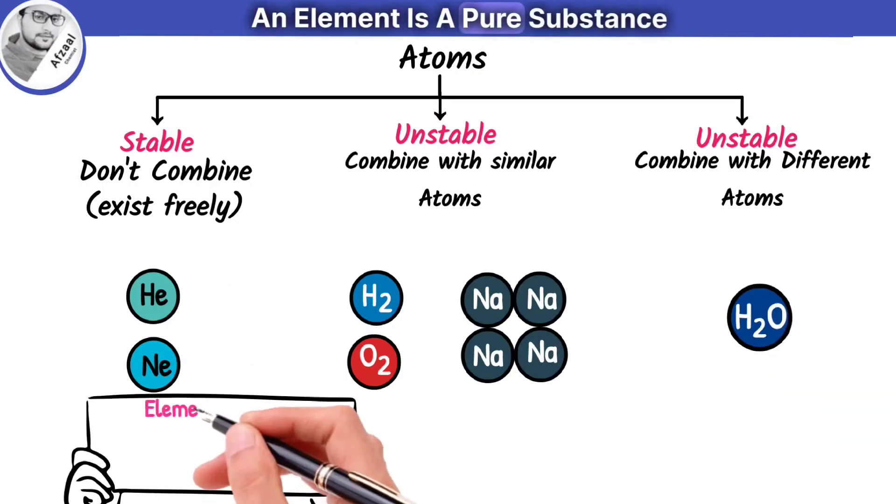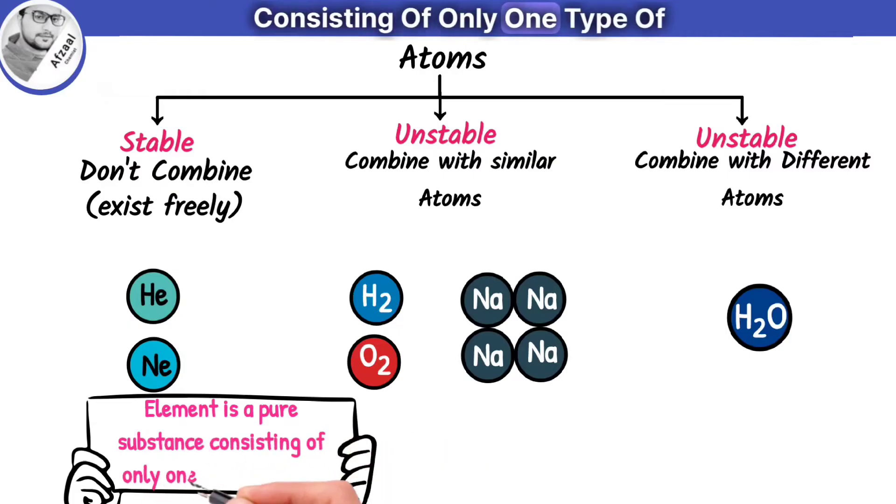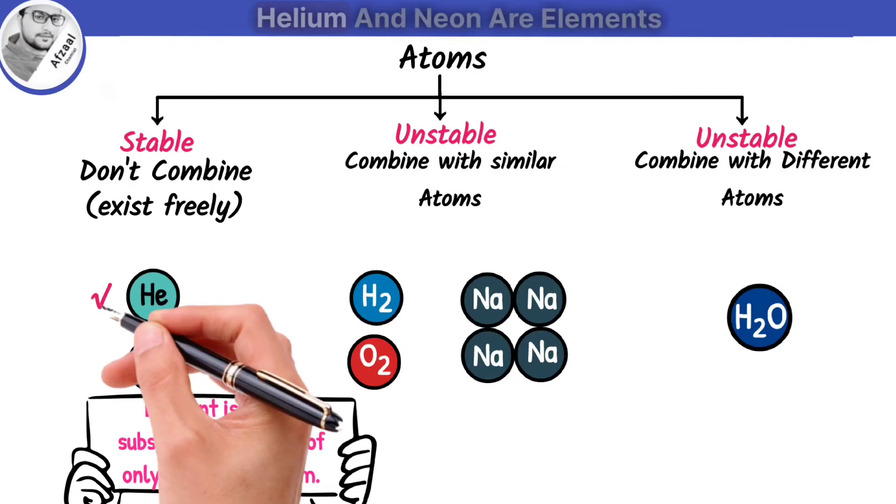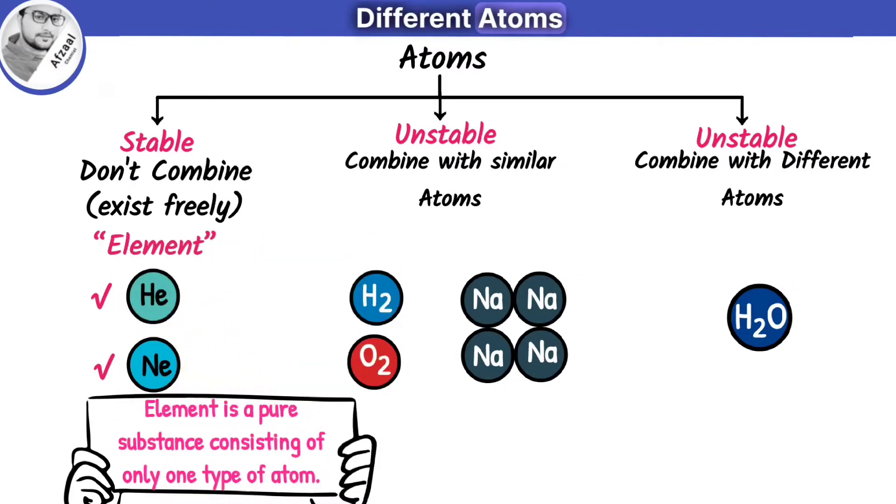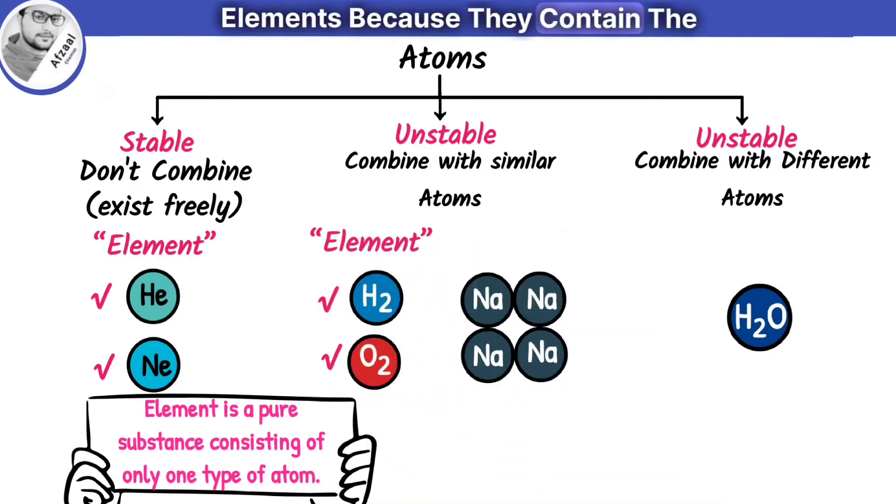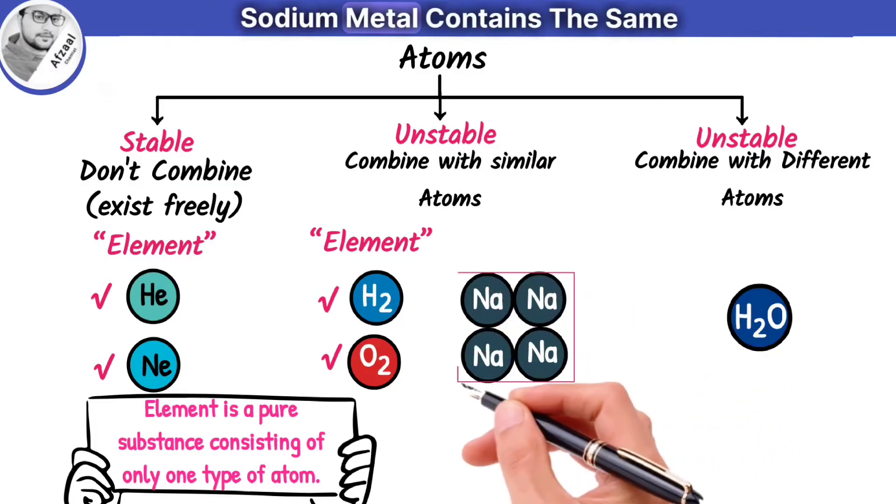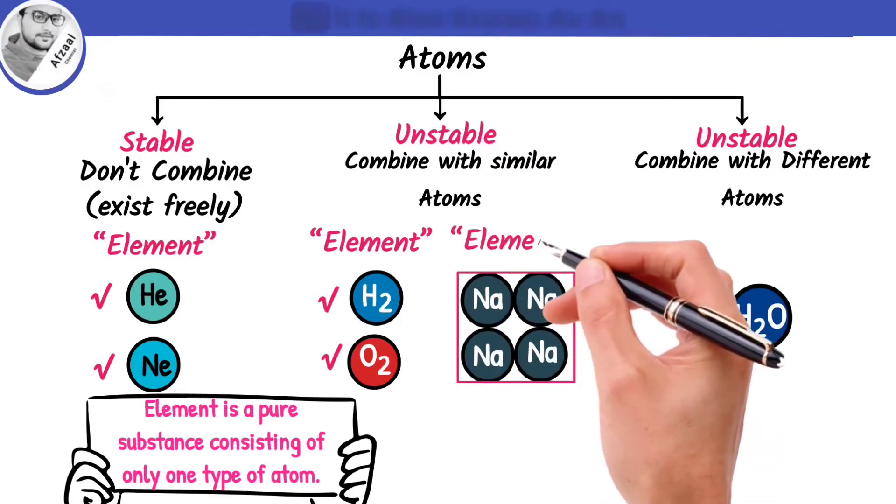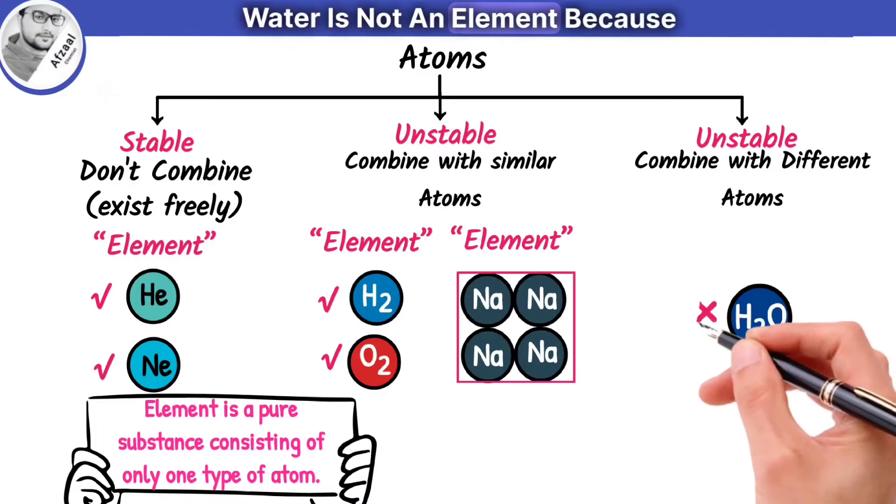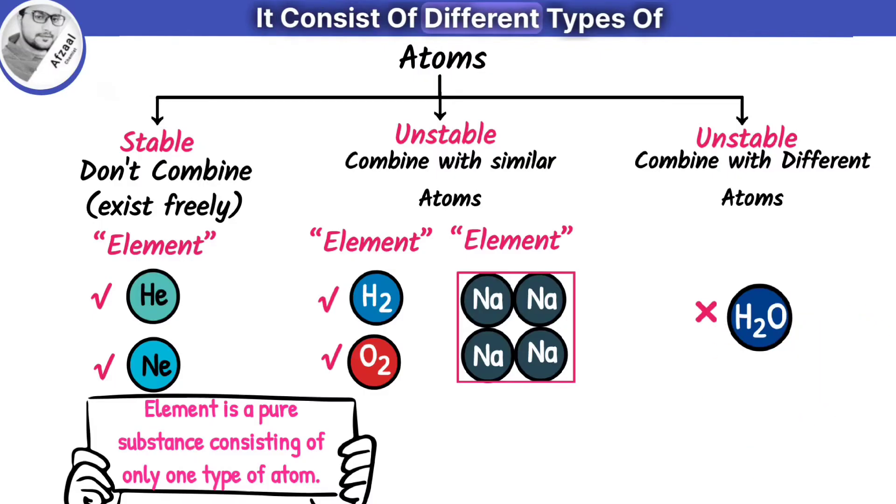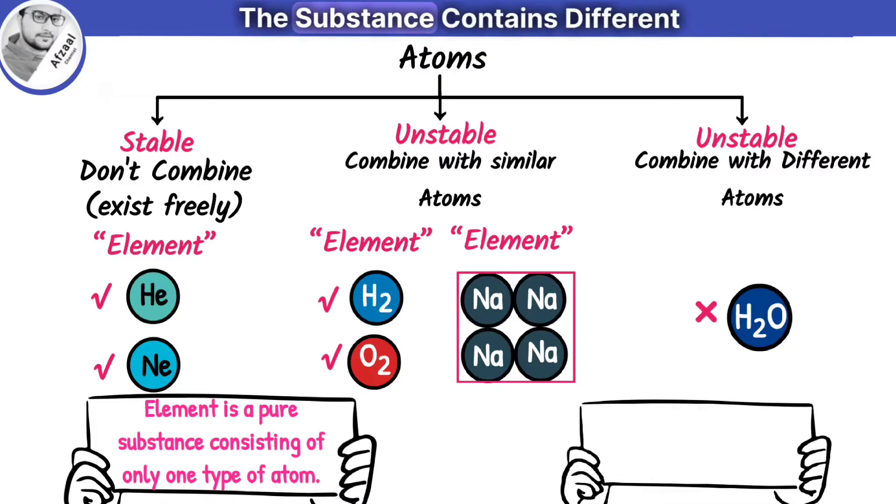Let me define element. An element is a pure substance consisting of only one type of atom. So according to the definition, helium and neon are elements because they do not contain different atoms. H2 and O2 are also known as elements because they contain the same type of atoms. Similarly, sodium metal contains the same type of atoms, so it is also known as an element.